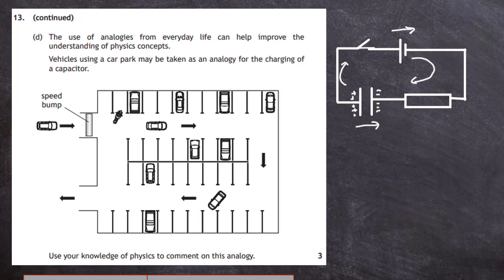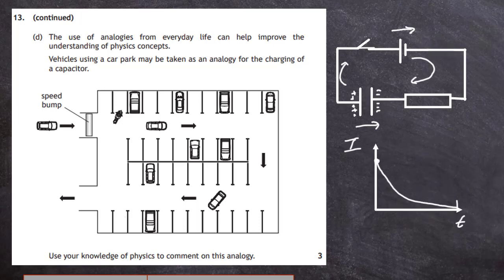The electric field from the cell and the opposing electric field from the capacitor mean electrons cannot get onto the plate. This is shown in the current-time graph: there is a large current at the start, which reduces as more electrons gather on the plate, making it harder for further electrons to join. The current reduces to zero when fully charged, where the two fields oppose completely and no electrons can move.